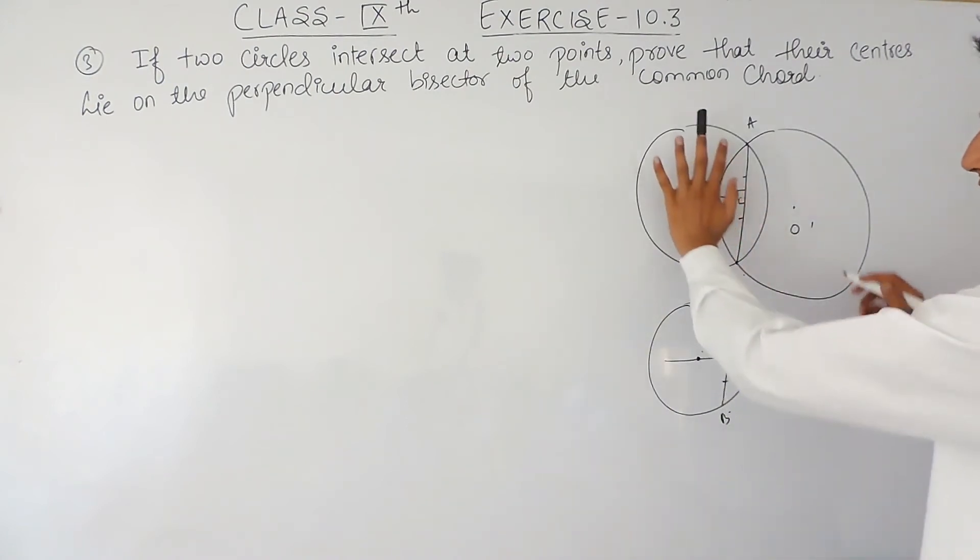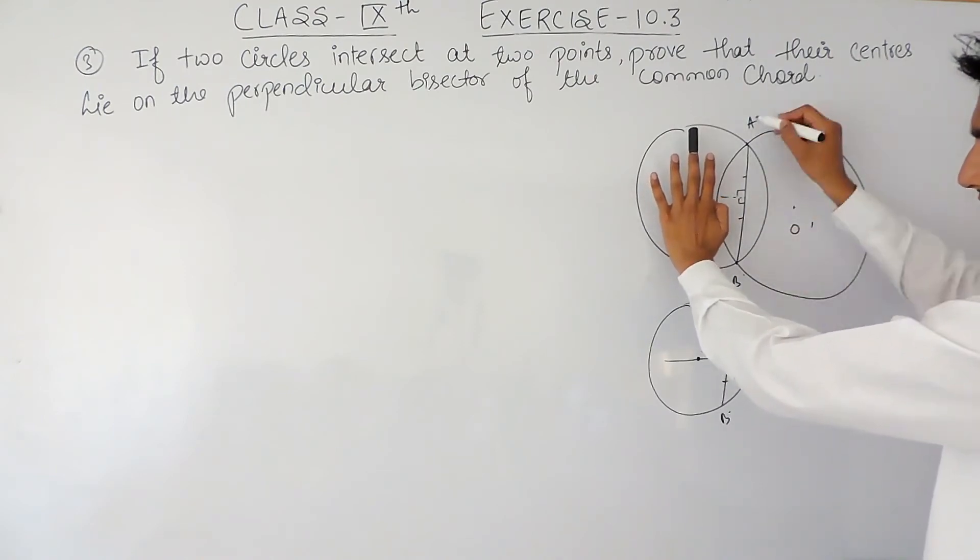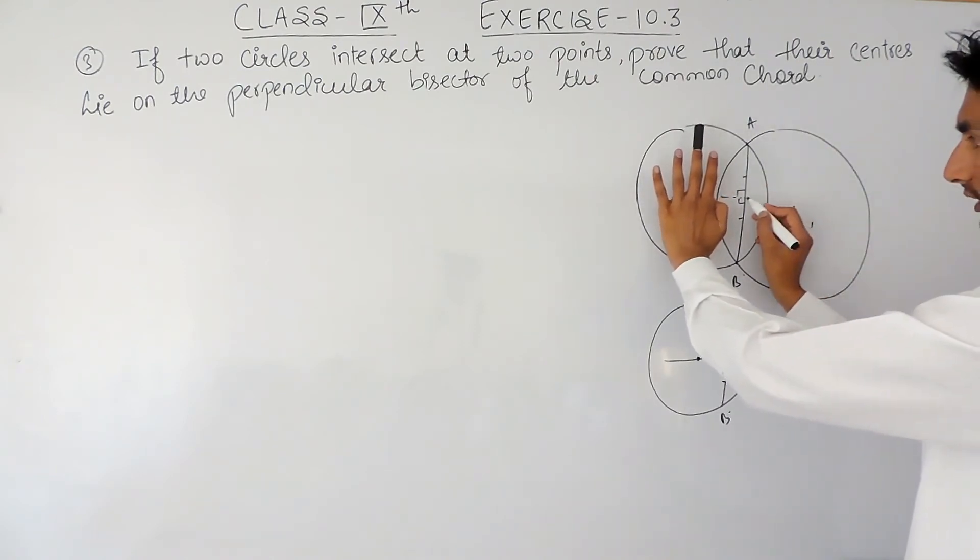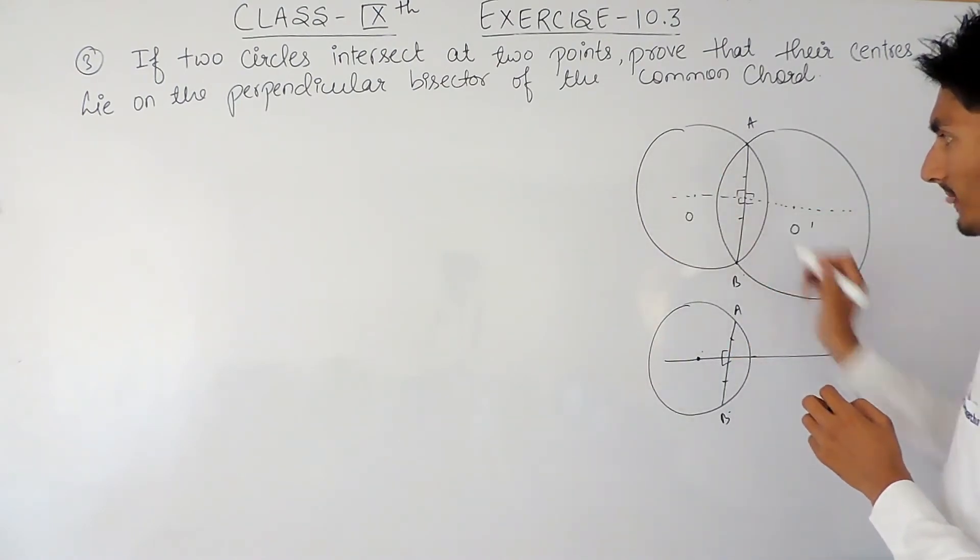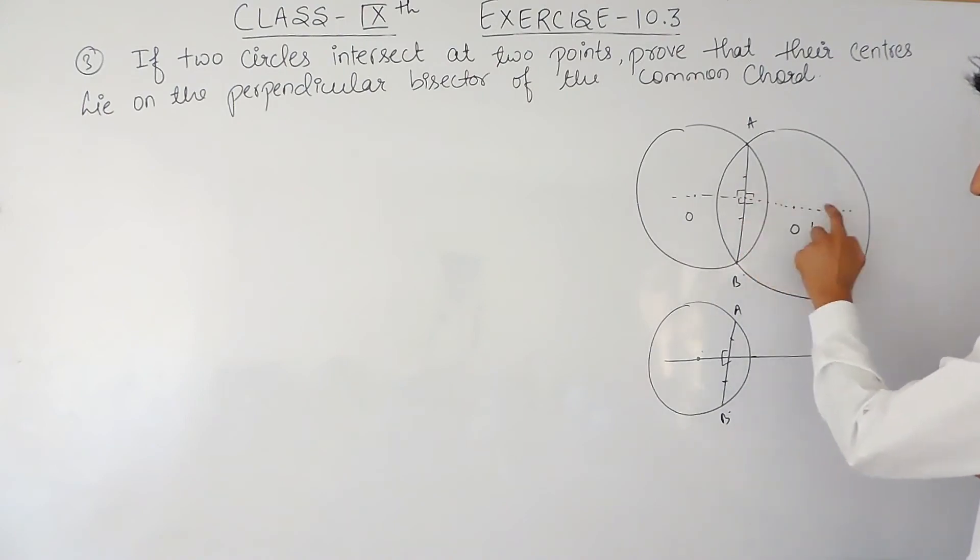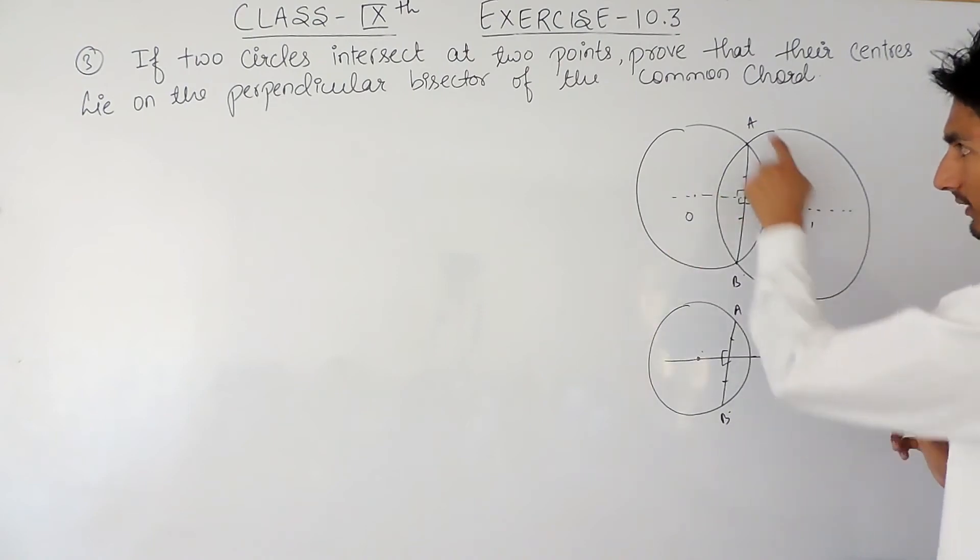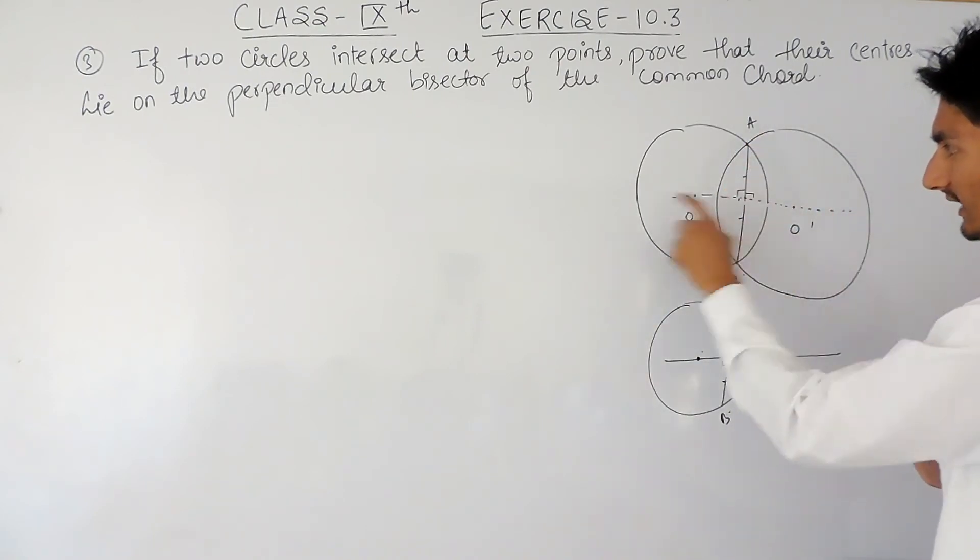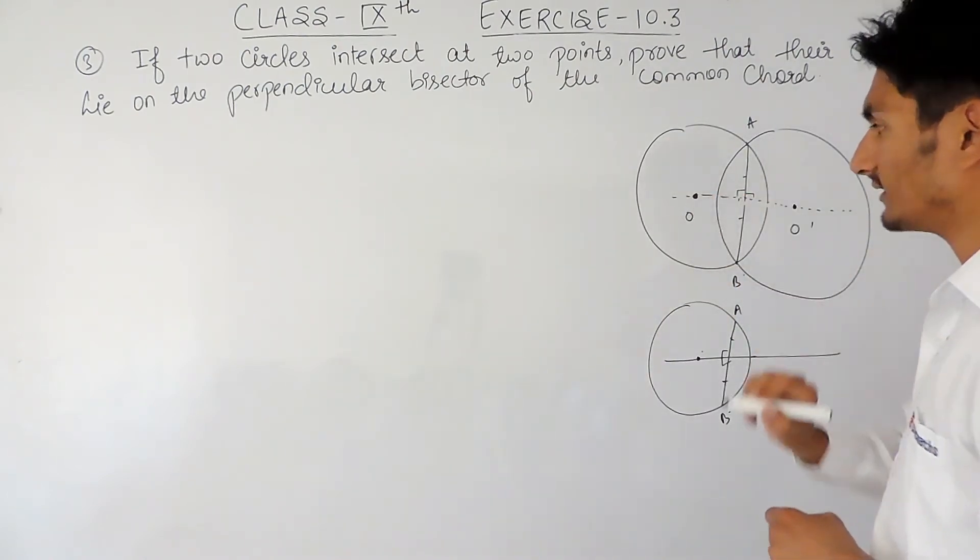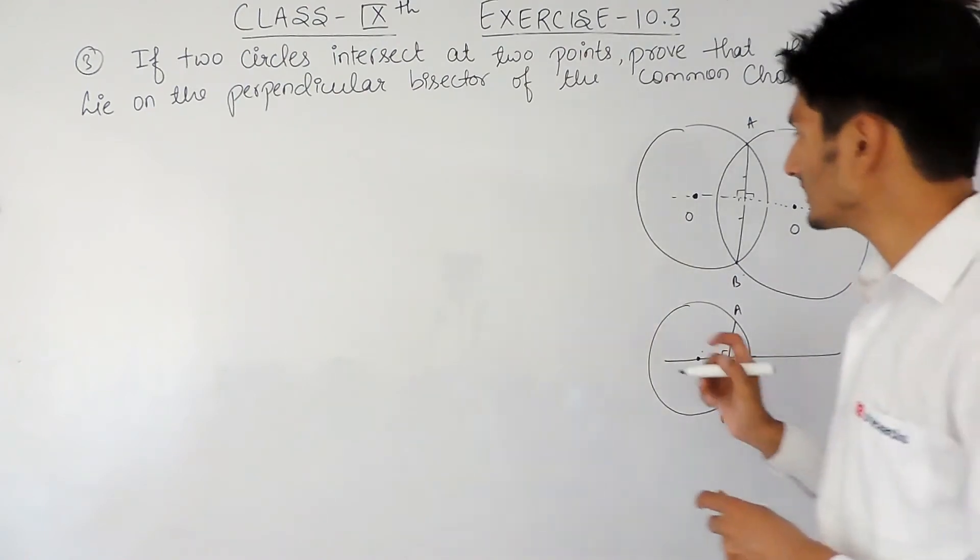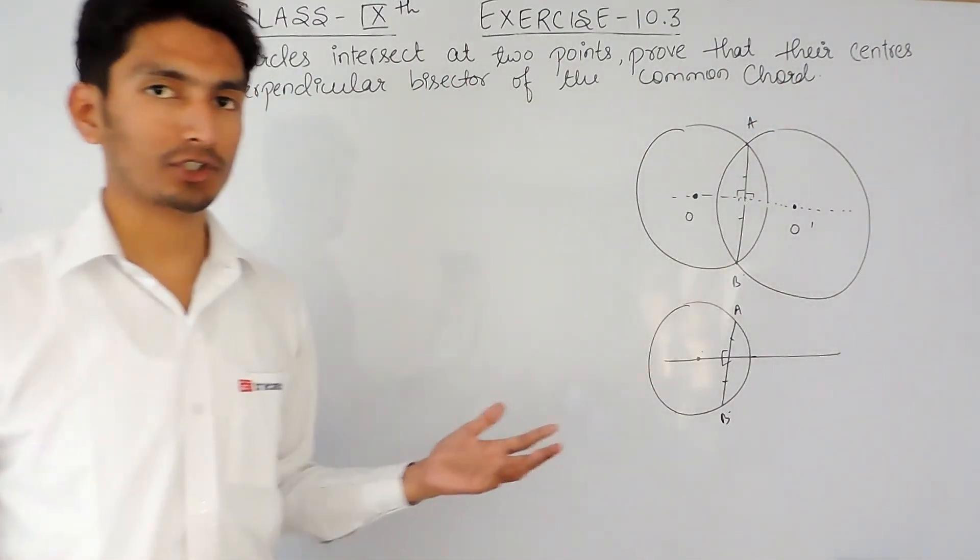Similarly, for this circle, this is the chord, so if I draw a perpendicular bisector for this chord, again it should pass through the center. So obviously this is the same line, or you can say this is the perpendicular bisector for this chord, and this line is passing through this center as well as from this center. This is how you can prove this particular question.